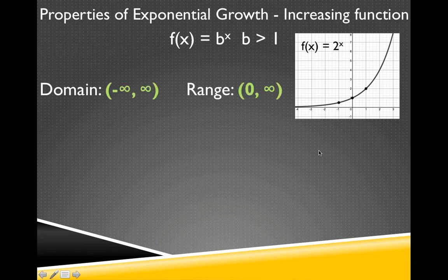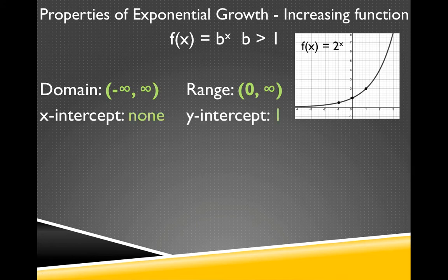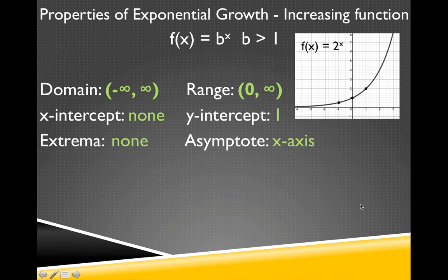The properties of this function are: the domain is all real numbers; the range is from 0 to infinity, not including 0 because our function will never touch 0. There are no x-intercepts because the graph will never touch the x-axis. The y-intercept is 1. There are no extrema. This particular graph doesn't have a highest value because it continues to infinity. The asymptote is the x-axis because that's what the graph is getting closer and closer to but will never touch.